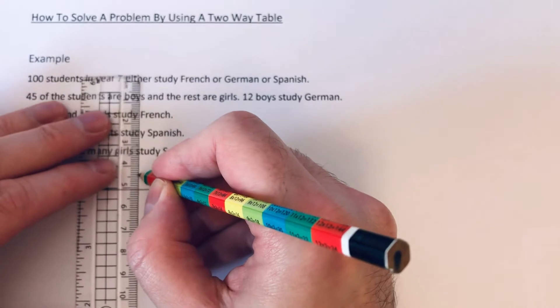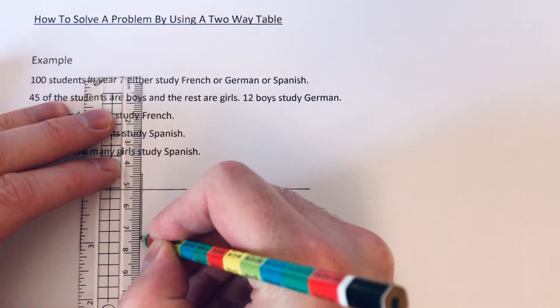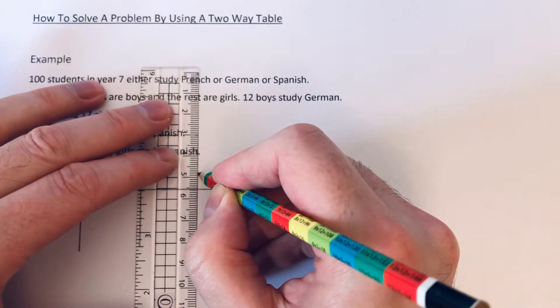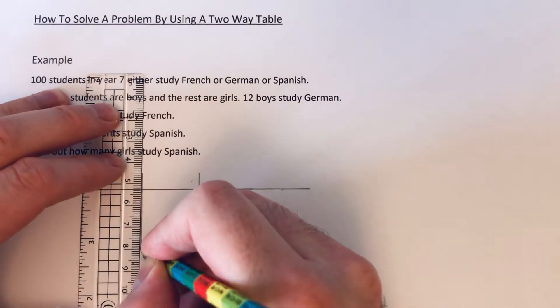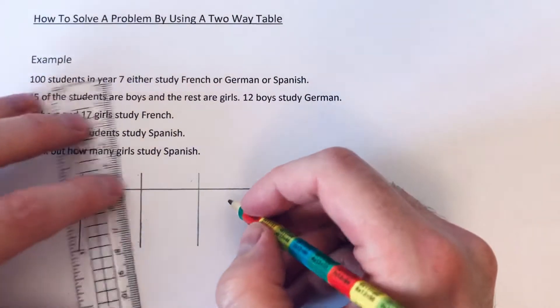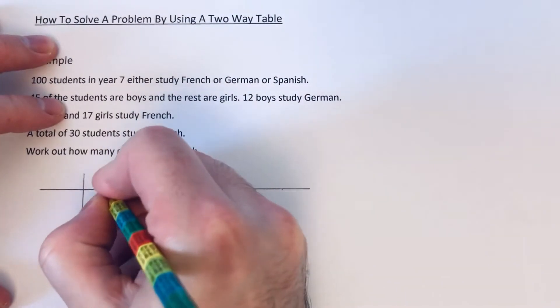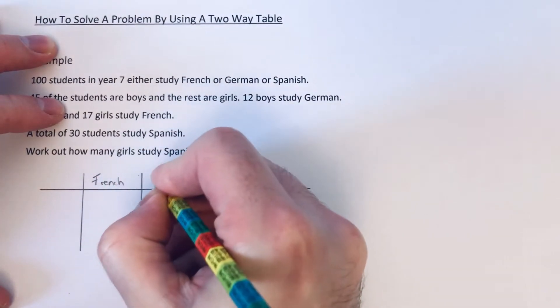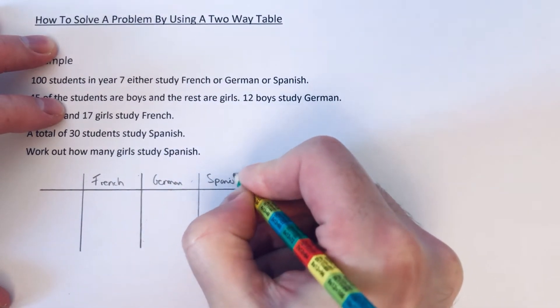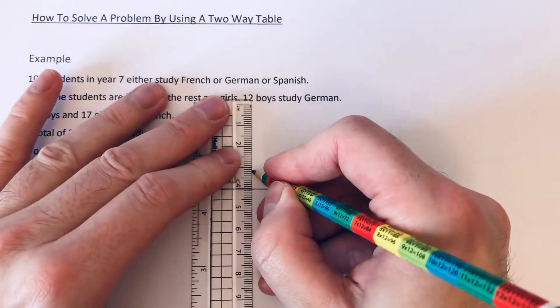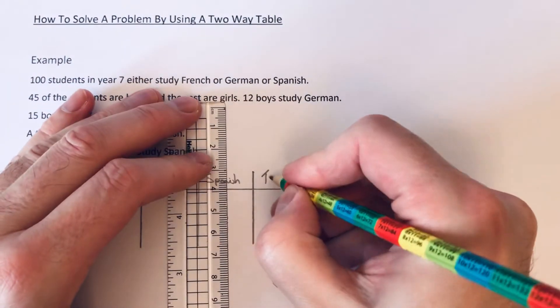Okay, so we've got three subjects. We've got French, German and Spanish. And we also need a column for our totals.